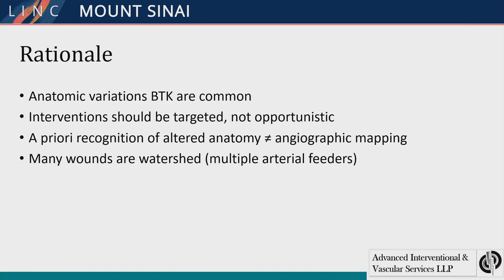The rationale behind this talk — and this is really important if you're doing critical limb ischemia — is that anatomic variations in the arteries below the knee, and the arteries in the foot in particular, are very, very common. I don't think we yet fully understand the variability of the anatomy, particularly the collateral anatomy that forms in individuals who have underlying disease with occlusion in the major arterial branches, such as diabetes and chronic kidney disease.